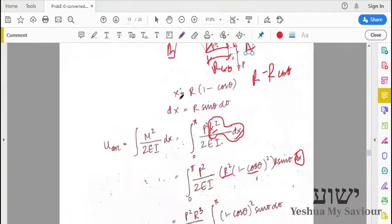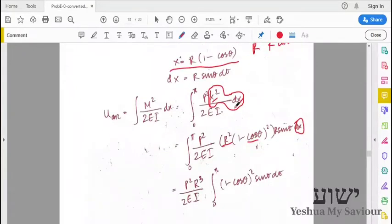We differentiate this equation and we get dx is equal to, obviously minus cos theta is sin theta, d theta. So we can get r sin theta d theta.